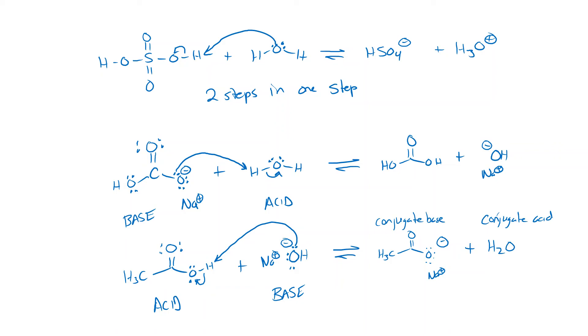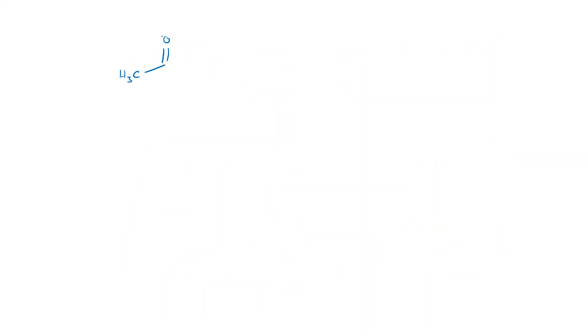If there's a negative charge, it's pretty easy: find the negative charge — that's your base. Use those electrons to make a new bond to hydrogen, break one of the sigma bonds, and create a lone pair on your acid to create the conjugate base.